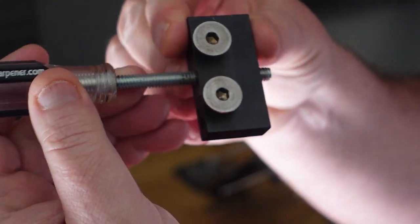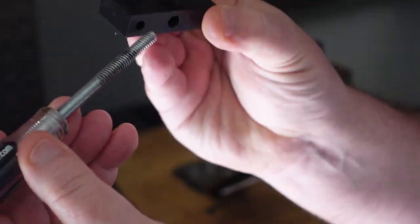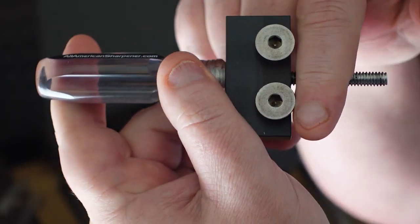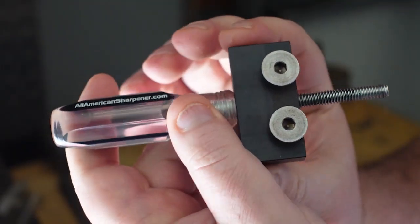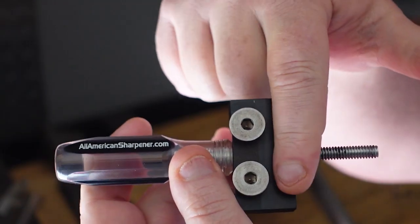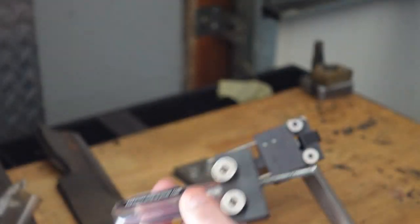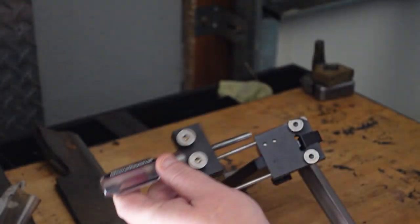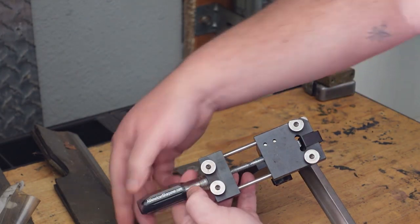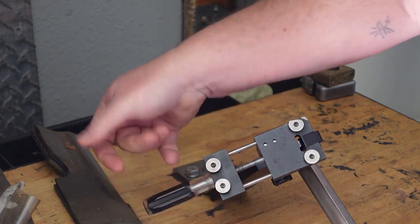...and you get like an extra inch closer for your smaller blades. So if your blade is too small with it in this position, then all you have to do is switch that around, line it back up here, stick it back through there, and tighten this back down.